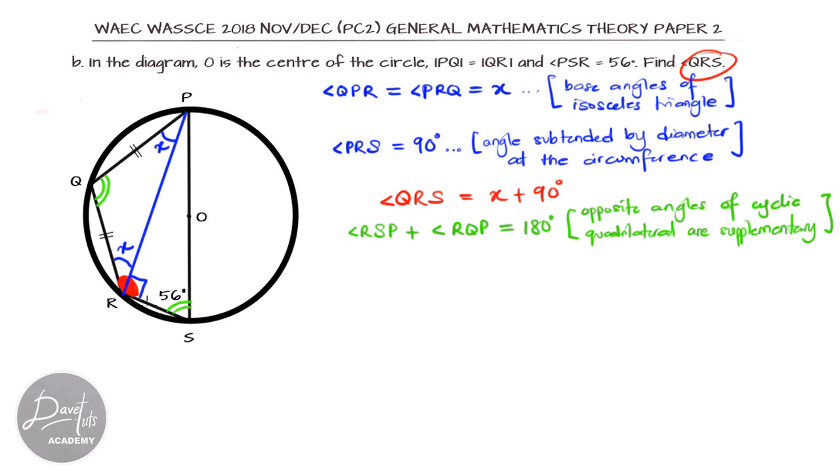With this angle expression that we just wrote, we can say 56 plus this angle, if we call it A, 56 plus A is 180 degrees, such that A is 180 minus 56, and that will give us 124 degrees. So, now, we've gotten A.